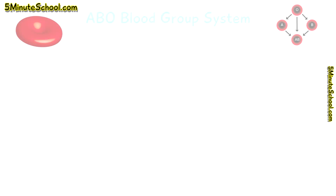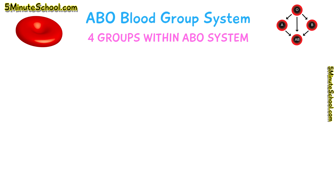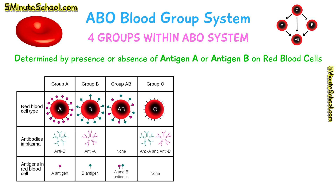Welcome to 5 Minute School. In this video we're going to be talking about the ABO system of blood grouping. The ABO system involves 4 potential blood types and they are determined by the presence or absence of antigen A or antigen B. The 4 blood group types are A, B, AB, and O.